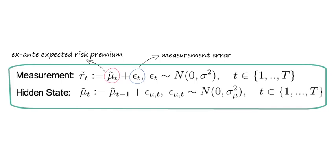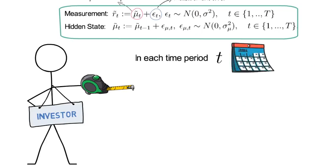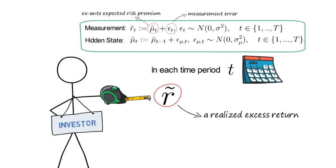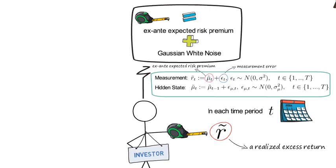So in words that system here says that the investor measures in each time period t a realized excess return r̃. And the investor assumes or knows, either from a model or from prior research, that these measurements coincide with the sum of the ex-ante expected risk premium and a Gaussian white noise measurement error.